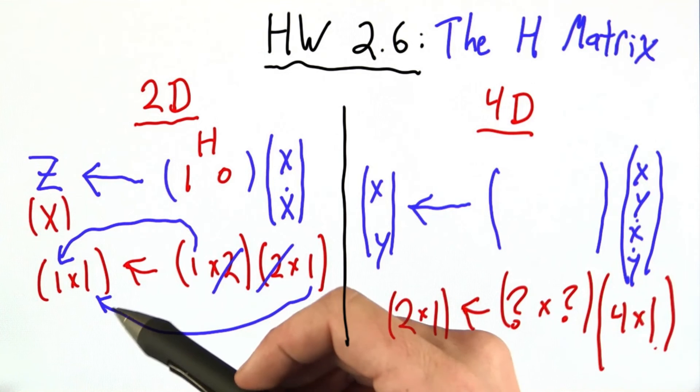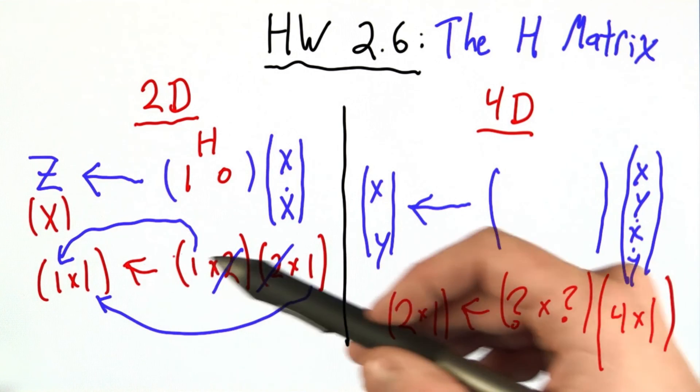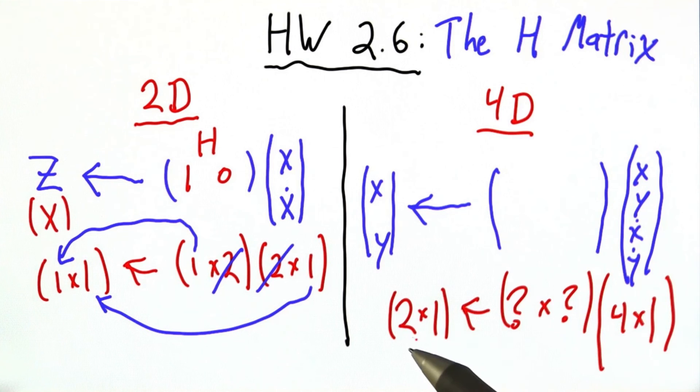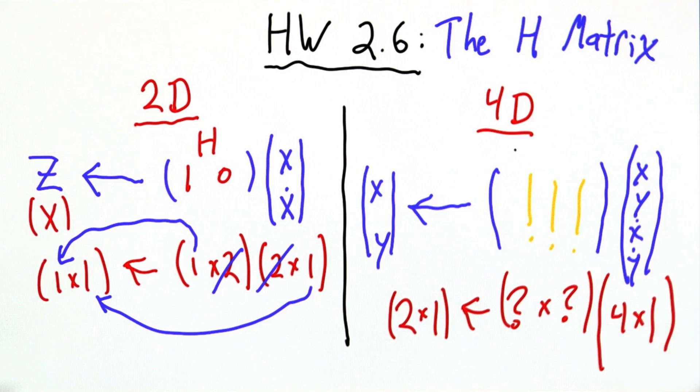Now, can you use the intuition we built up here for how the dimensionality of matrices works with this to fill in the question marks? I think once you figure out the number of rows and the number of columns in this H matrix, figuring out where to put your ones and zeros will be a little bit easier. I wish you luck.